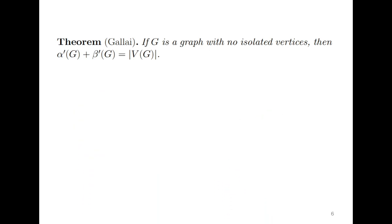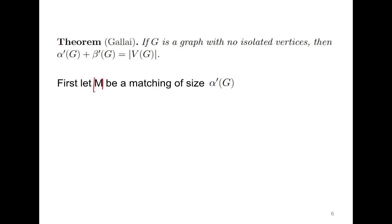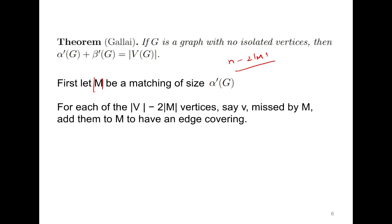Let M be the matching of maximum size, which means |M| = α'(G). This matching M has α'(G) edges, and it has covered 2|M| vertices. To form an edge cover, the worst case is we need to cover n − 2|M| vertices not covered by the matching. For each of those n − 2|M| vertices, we add one edge incident to it to M to form an edge cover. If 5 vertices are not covered, we add 5 edges, because each such edge has an endpoint at one of the missed vertices.